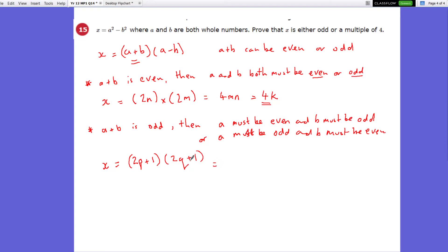And if we expand this out, we end up being 4pq plus 2p plus 2q and plus 1 times 1 is 1. So we did that times that, 2p, 4pq, 2p times 1 is 2p, 1 times 2q is 2q, 1 times 1 is 1.